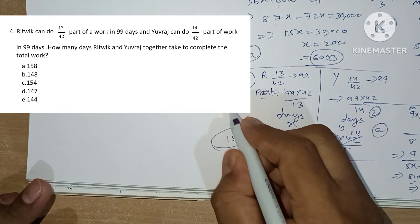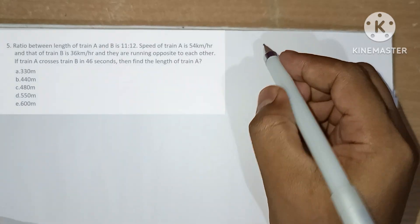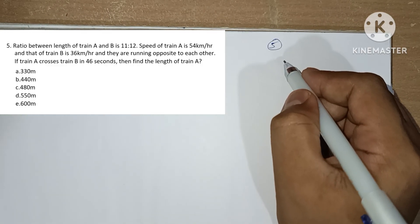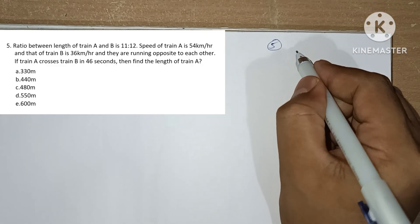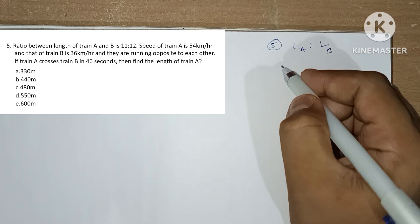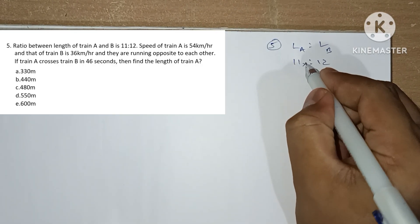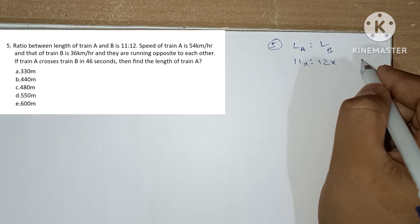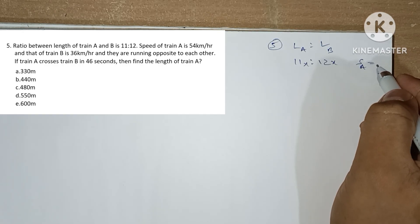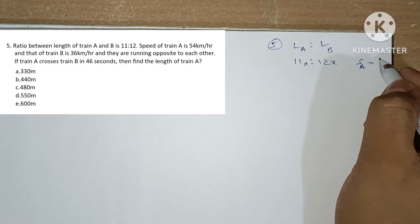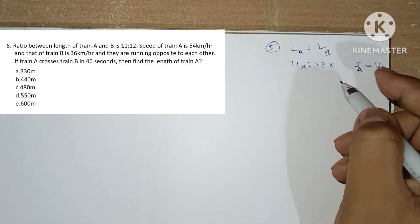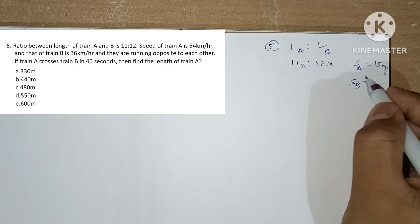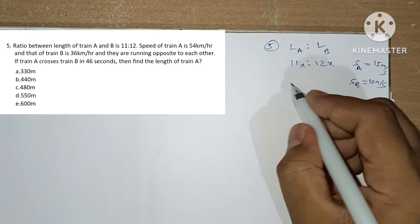Question number 5: the ratio of the length of train A to train B is 11 is to 12, so assume 11x and 12x. Speed of train A is 54 km/h, which converts to 15 meters per second. Speed of train B is 36 km/h, which converts to 10 meters per second.